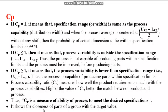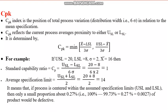CP shows the closeness of a group of parts with the target value. If your process has a higher CP value — more than 1, even 2 or higher — that is very good, indicating your process is highly capable.